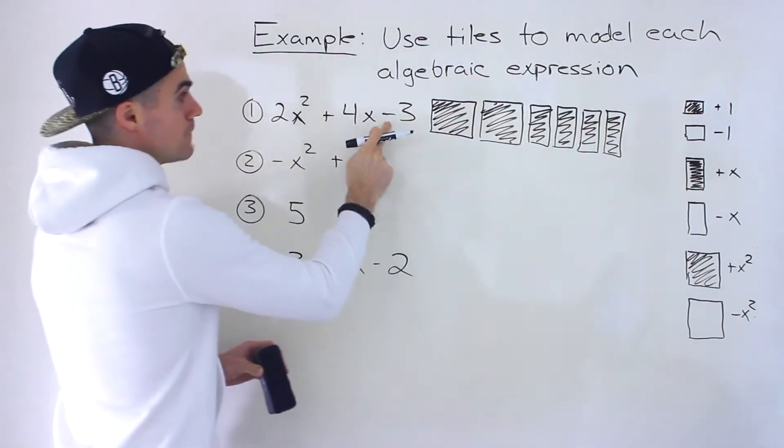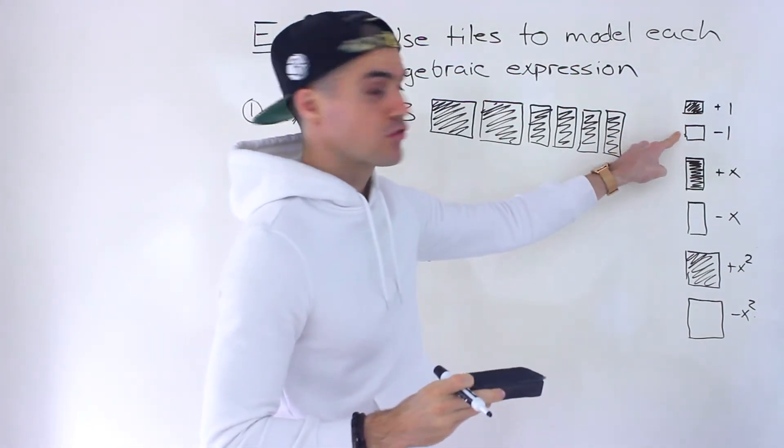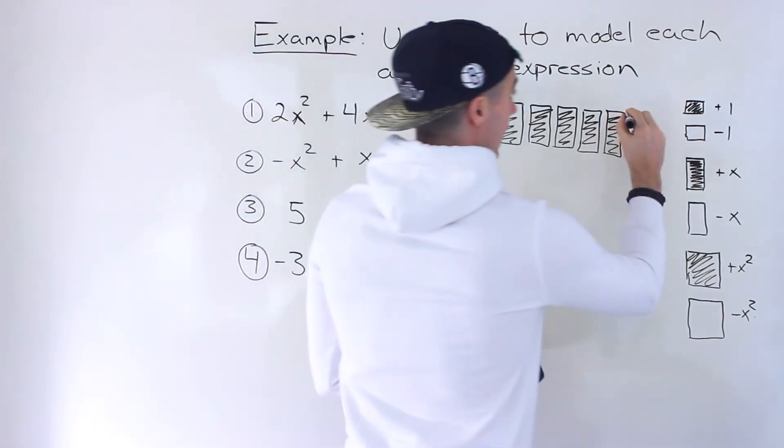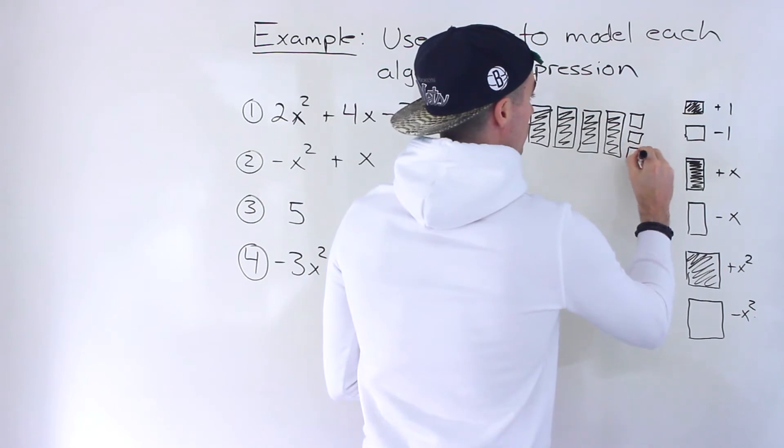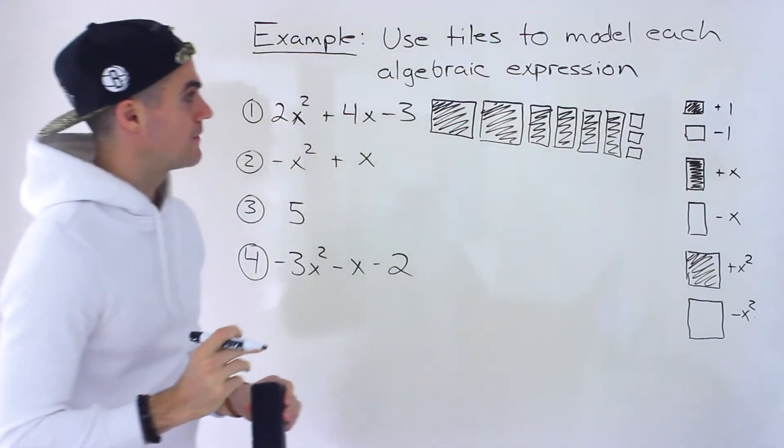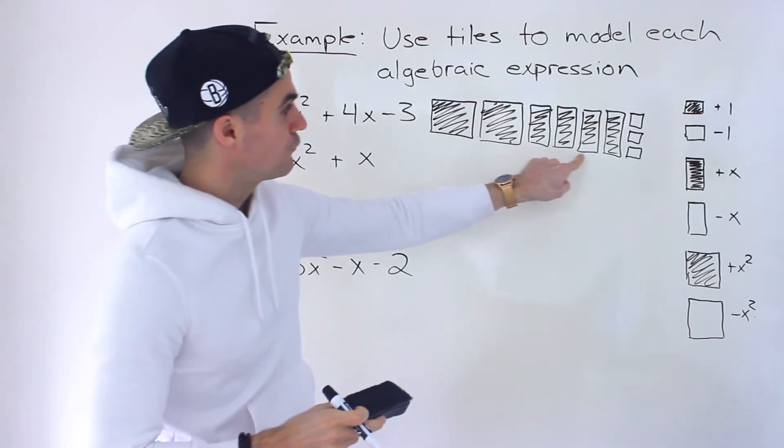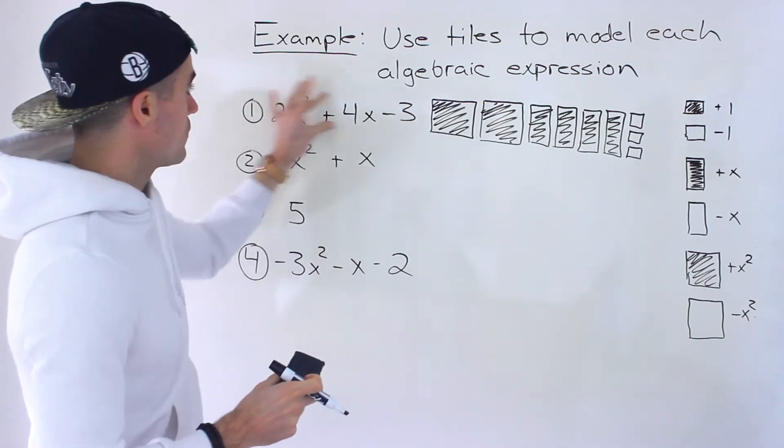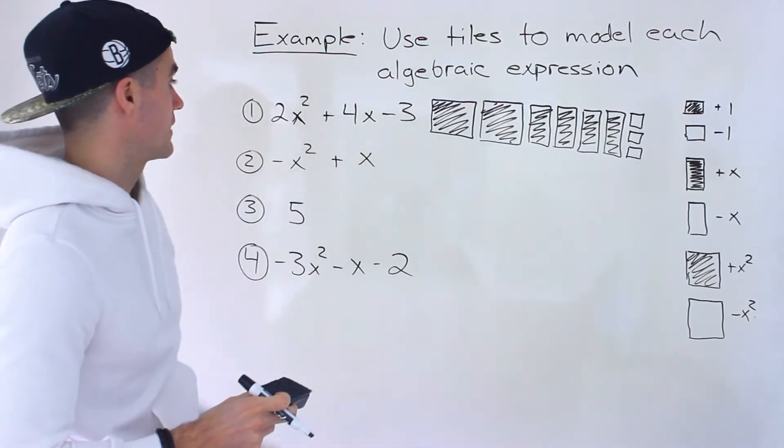And then we have minus 3. So that's a number. Notice that there's going to be 3 of these hollow small squares. So we would have 1, 2, 3 like that. Positive 2x squared plus 4x minus 3, right there. So this algebraic expression modeled with tiles looks like that.